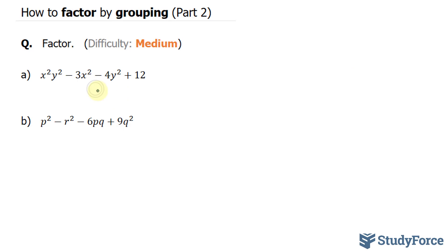In the first attempt, I rearranged the expression so that this term was grouped with the first one and this term was grouped with the second one. I ended up with x squared y squared minus 4y squared minus 3x squared plus 12. And then I factored this group and this group individually.